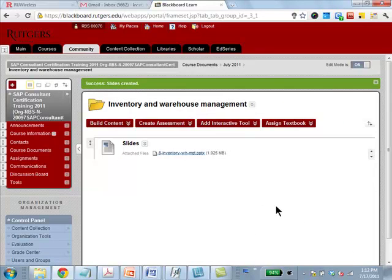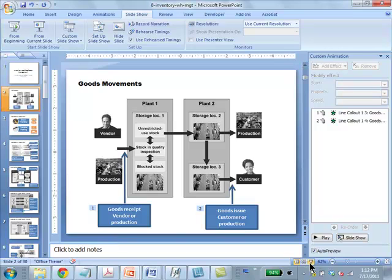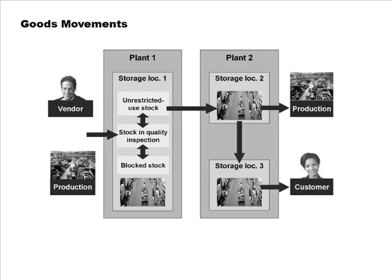I posted the lecture just now, so we'll talk about inventory and warehouse management and then do some review questions. In inventory and warehouse management we are dealing with two aspects: one is keeping track of how much material we have, in which storage location, and in what status they are. The second aspect is the actual warehouse management part — physically exactly which location, which shelf, which aisle.